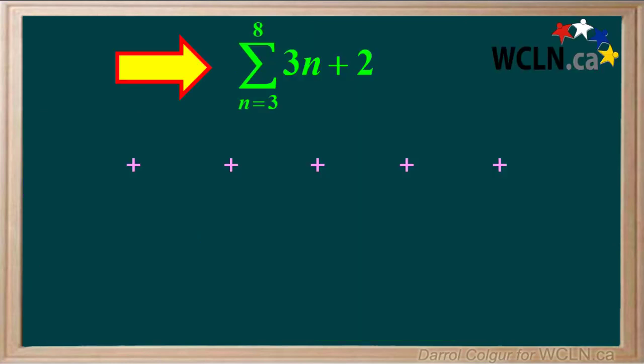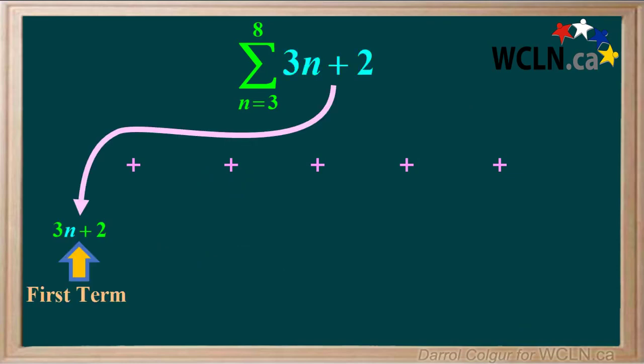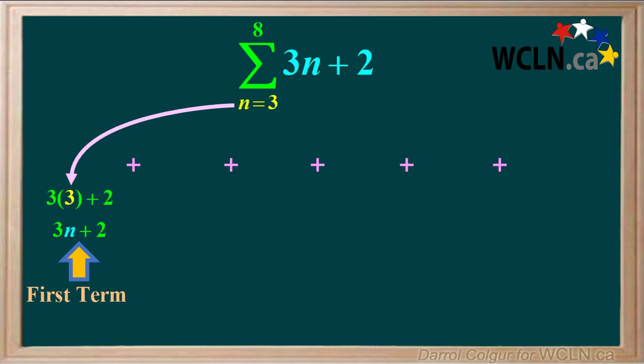Let's find the values of all the terms of the series represented by this notation. To find the first term, we'll start with the function 3n plus 2. The value of n in the first term is written below sigma, and it is 3. So the value of the first term is 9 plus 2, or 11.